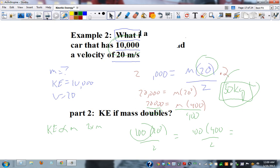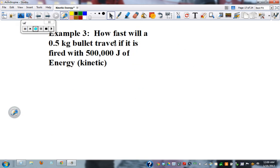And finally, how fast? So we don't know velocity. We know the mass equals 0.5 kilograms. And kinetic energy equals 500,000 joules. So our setup is 500,000 equals mass, 0.5, times we don't know, divided by 2.